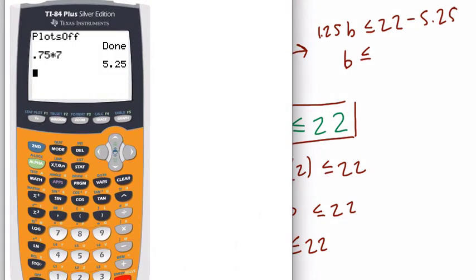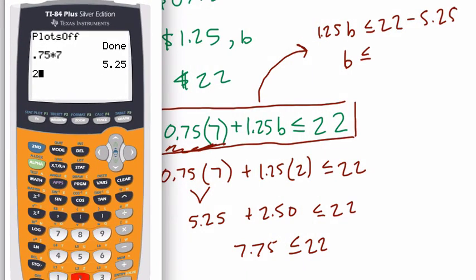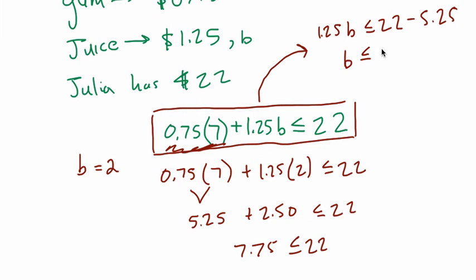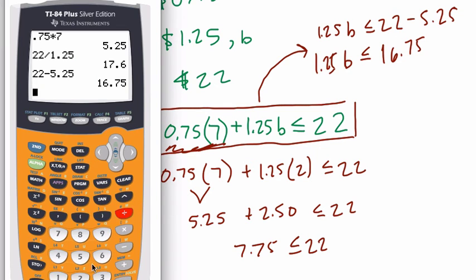Well, here, oops, feel that out of the way. 22 divided by $1.25 is, sorry, what am I doing? 22 minus 5.25 first, let's simplify. So that's $16.75, right? So then we divide $16.75 by $1.25.